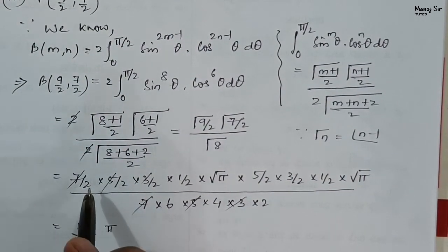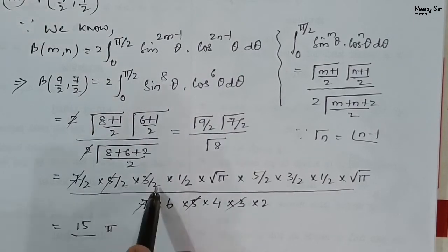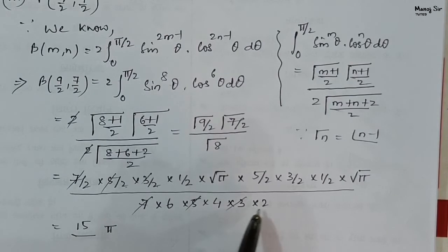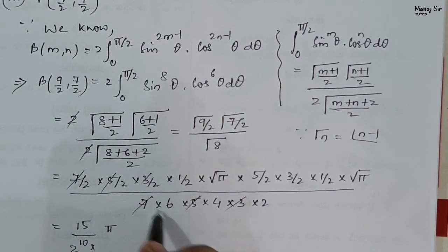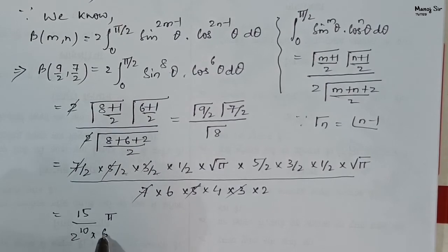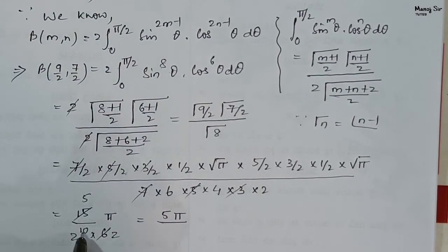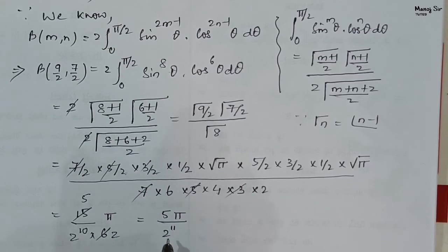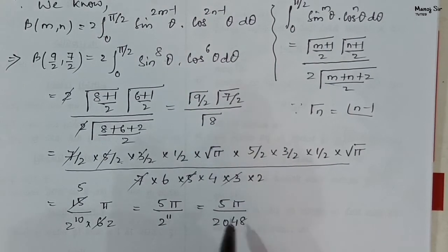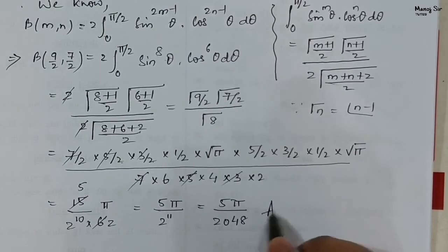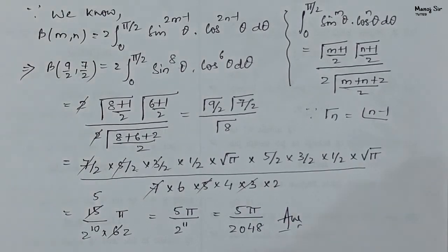In the denominator, the remaining even factors contribute powers of 2. Counting the factors of 2, we get 2^10, and with the remaining factor of 6 = 2 × 3, where 3 cancels with a 3 in the numerator, we have an additional 2, giving 2^11 = 2048. The final answer is therefore 5π / 2048. I hope you have learned a lot from this video. Please hit the like button and share with your friends. Thank you so much.